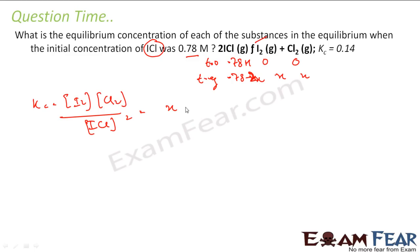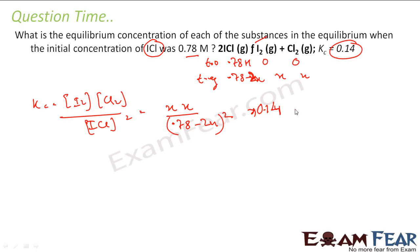The concentration of I₂ is x moles per liter, and the concentration of Cl₂ is x moles per liter, divided by the concentration of ICl, which is 0.78 minus 2x moles per liter, to the power 2. This value is nothing but 0.14. So this is x squared divided by (0.78 minus 2x) squared equals 0.14. There won't be any unit here because the moles per liter cancel. You solve this and get x equals 0.17 M.